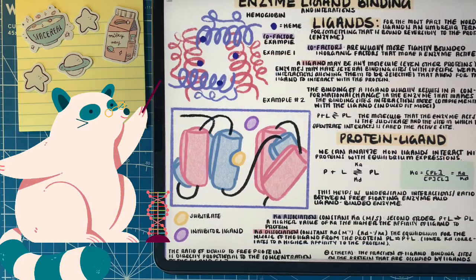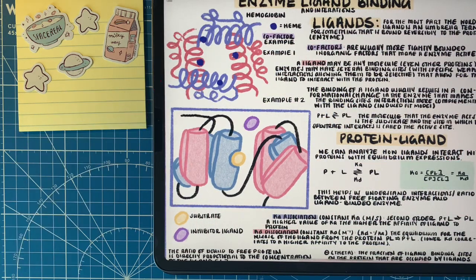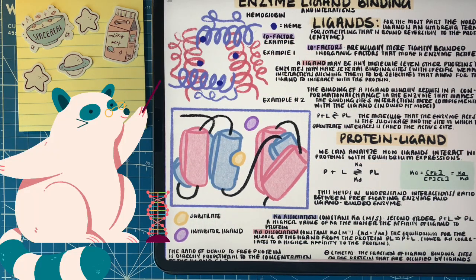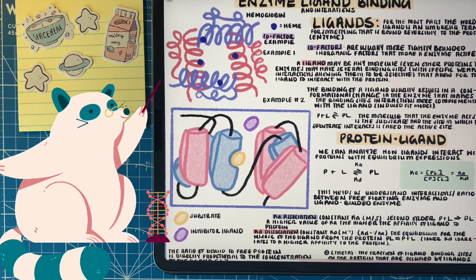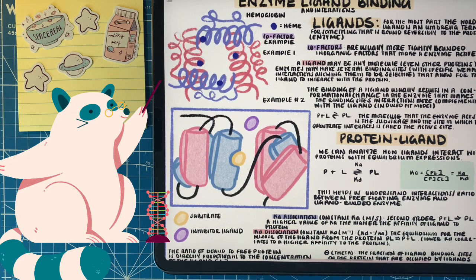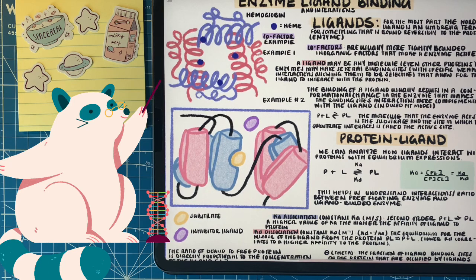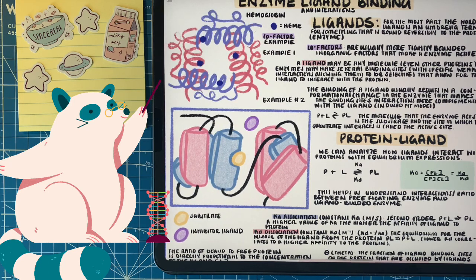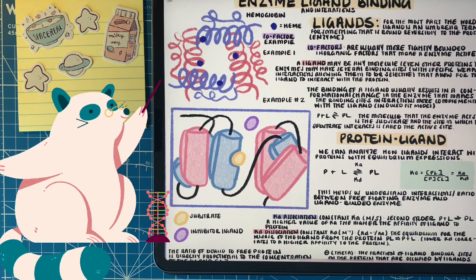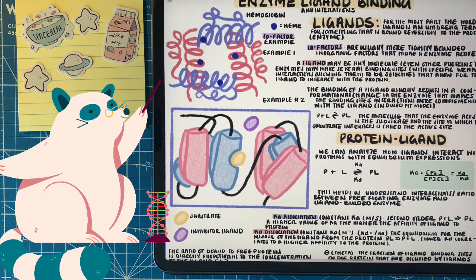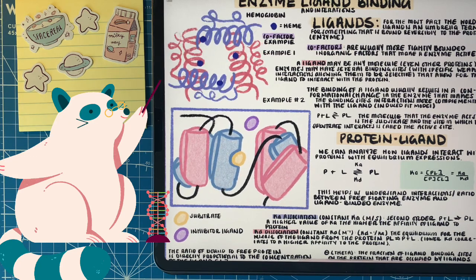I hope this video helped you understand affinity, association, dissociation, and cooperative binding when talking about enzymes. In the next video, we're going to start exploring more of the kinetic side of enzymes with Michaelis-Menten kinetics. All the infographics you see me use throughout this video can be downloaded in the link below. I hope you guys have a great day!